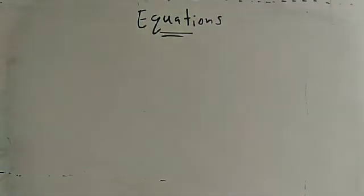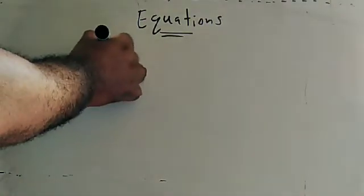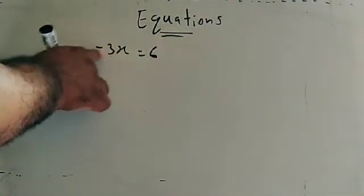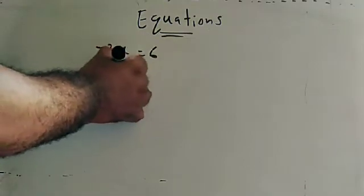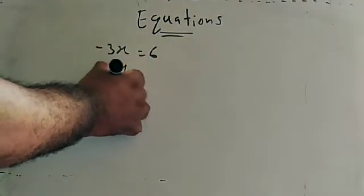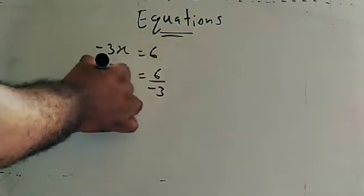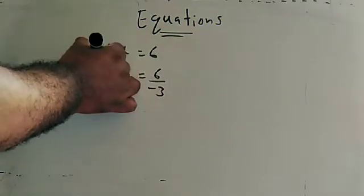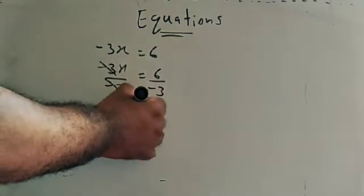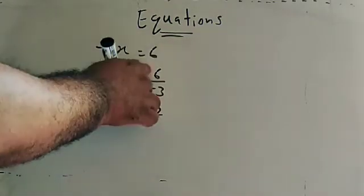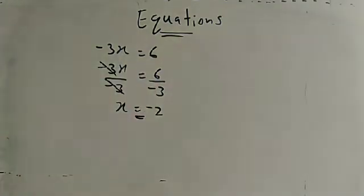Minus 3x is equal to 6. We divide both sides by minus 3. Minus 3 and minus 3 cancel, leaving x. Then 6 divide by 3 — with minus divided by minus gives plus — so x is equal to minus 2.